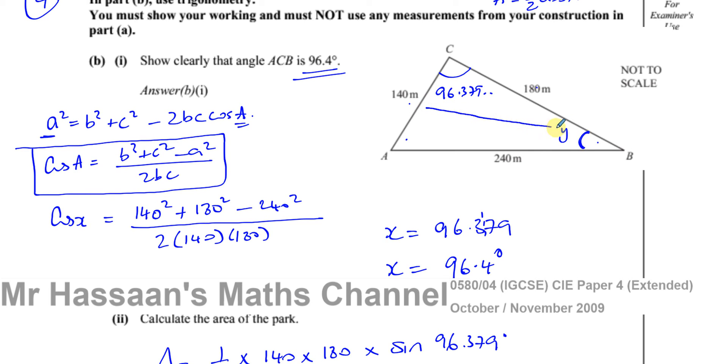And the sine rule uses pairs of opposites. So I have these two. And I have these two which I know. So I know for the sine rule, the sine of an angle divided by the length opposite that angle will give me the same ratio as the sine of a different angle in the same triangle divided by the side opposite that angle.